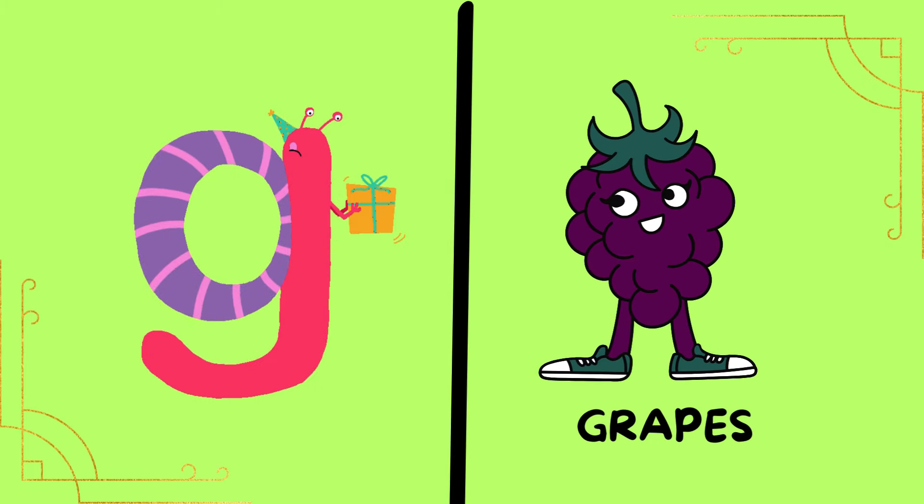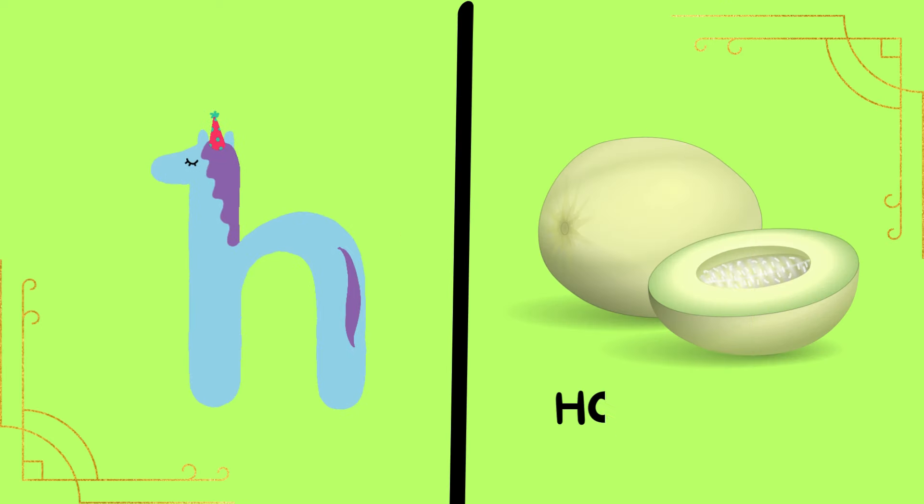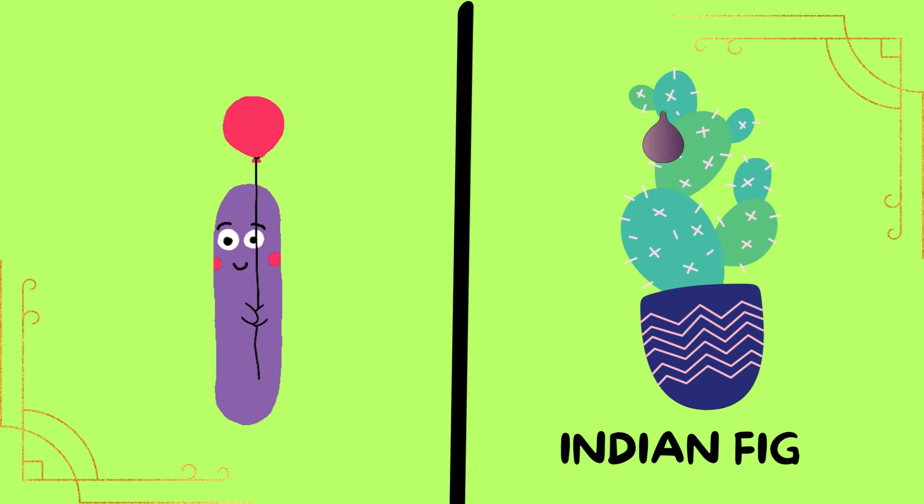G is for grapes. G is for grapes. H is for honeydew. H is for honeydew. I is for Indian fig. I is for Indian fig.